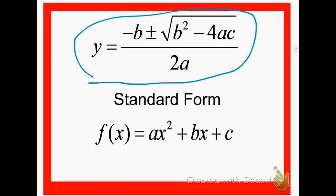You get your a, b, and c values from the standard form. The number multiplied times x squared is always a, the number multiplied by x is b, and the number that doesn't have an x term is c — your constant.